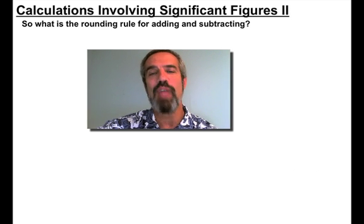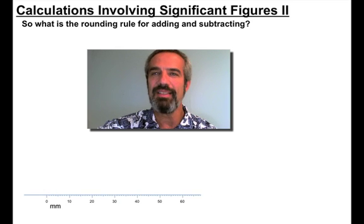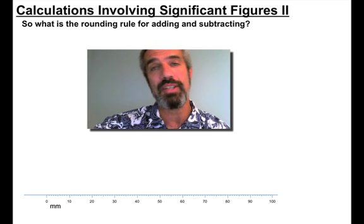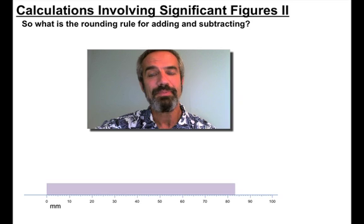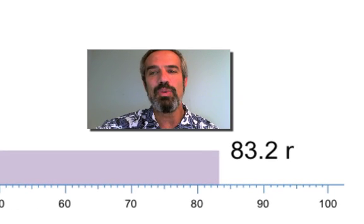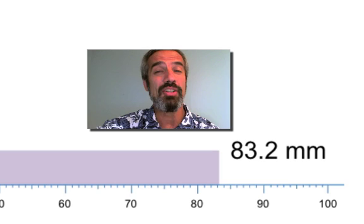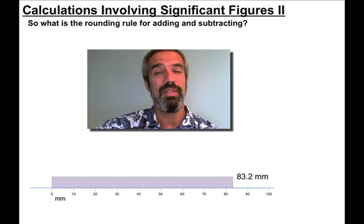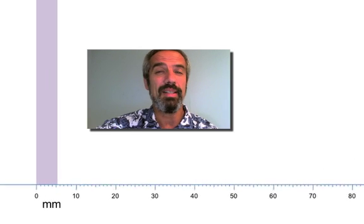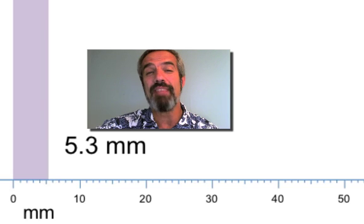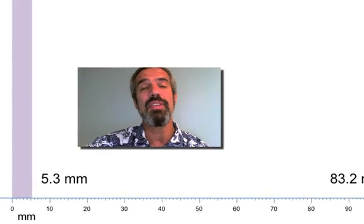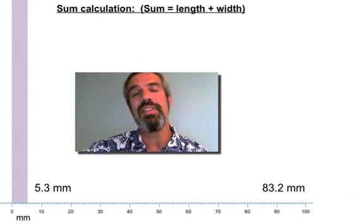So, what is the rounding rule for adding and subtracting? Well, let's start where we started before for multiplying and dividing, with an actual measurement, because that's what it's all based on. Measurements and uncertainty. Here's a rectangle. We'll call that 83.2 millimeters. Remember that 2 is our guess, our estimated digit there. We're certain of the 8 and the 3, we're guessing 2. When I turn it sideways, that looks about to be maybe 5.3, maybe 5.2, 5.4 millimeters, something in that range.